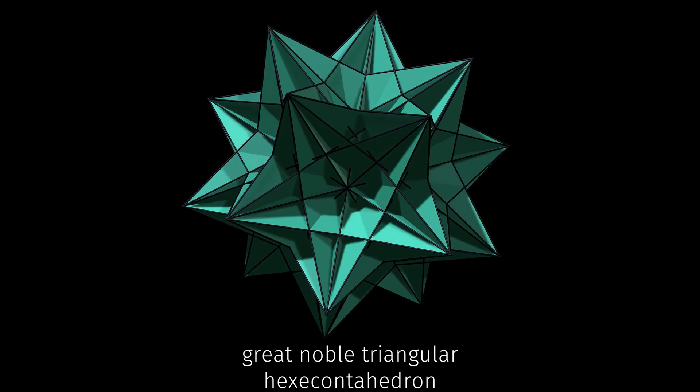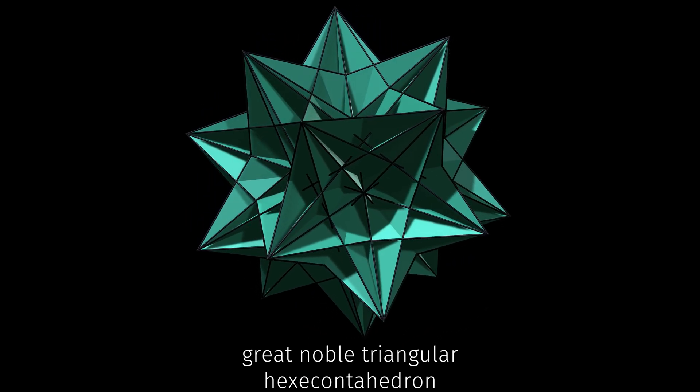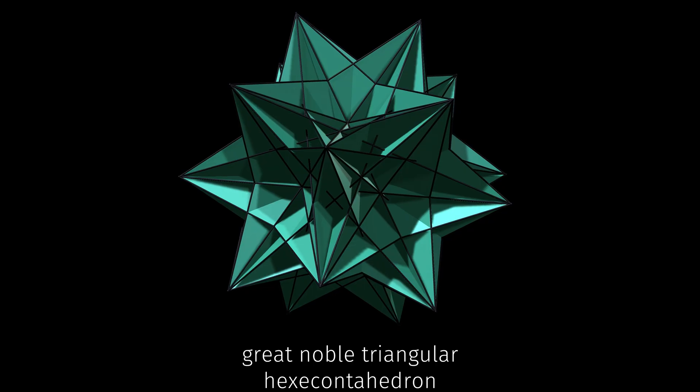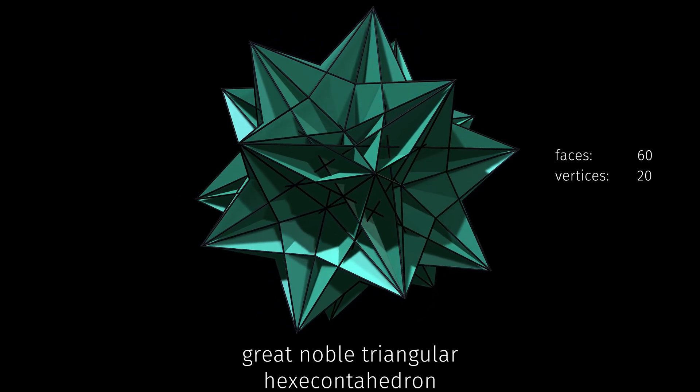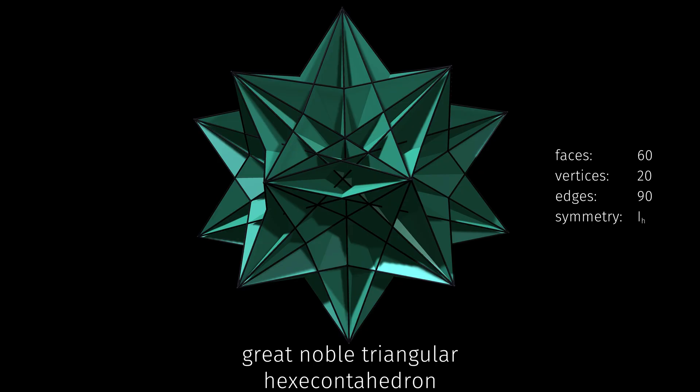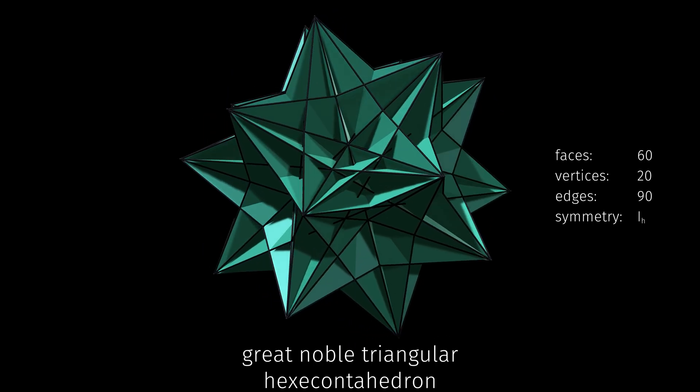The dual is the great noble triangular hexacontohedron with 60 identical isosceles triangles meeting at 20 identical vertices. Many of its properties could be predicted even before seeing it.